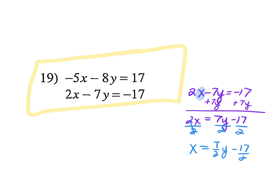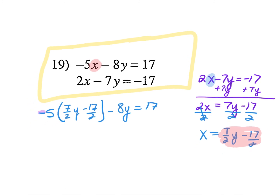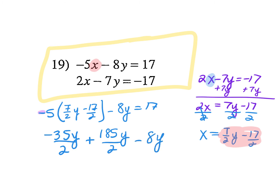I'm going to tough it out and use fractions. Everywhere I see an x in the top equation, I plug in 7/2 y minus 17/2. So: negative 5 times (7/2 y minus 17/2) minus 8y equals 17. Distributing: negative 5 times 7/2 gives negative 35y/2. Negative 5 times negative 17/2 gives positive 85/2. Minus 8y equals 17.